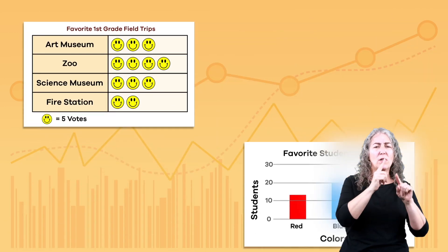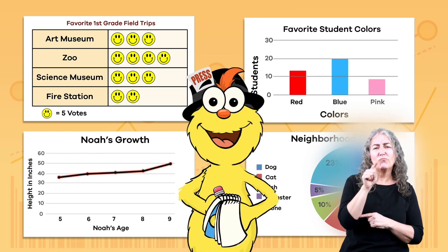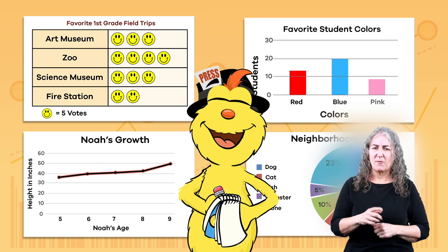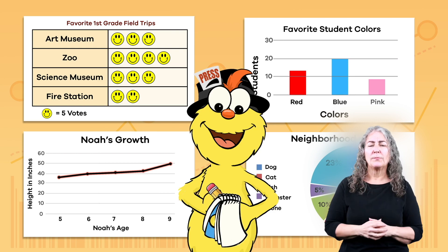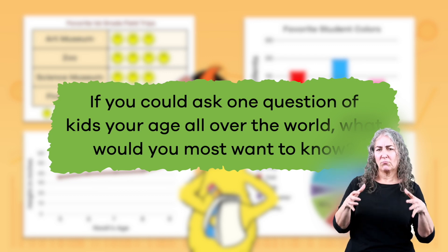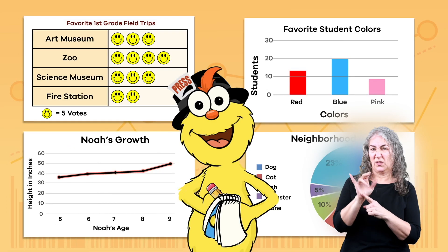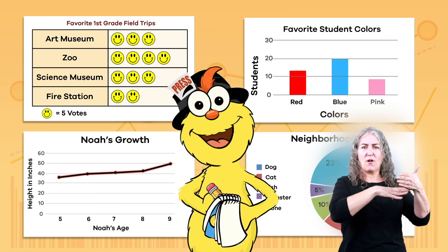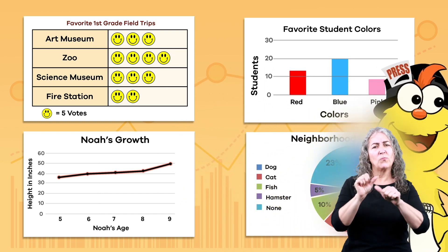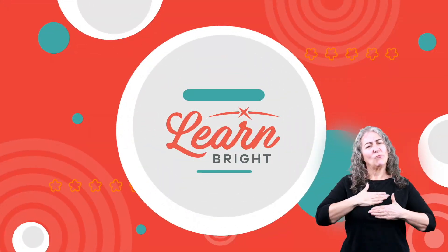Now that you have learned about 4 different types of graphs, which type was easiest for you to figure out? The best way to learn about graphs is to create your own. Begin by asking a simple question. If you could ask one question of kids your age all over the world, what would you most want to know? Use that question to make yourself a graph, and then start graphing your findings. Just keep working at it, and you'll be a pro in no time! Hope you had fun learning with us!